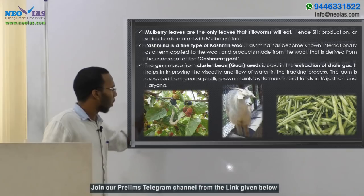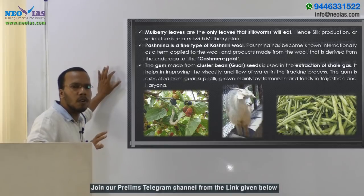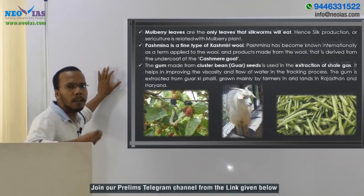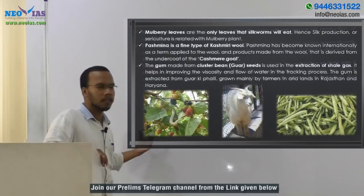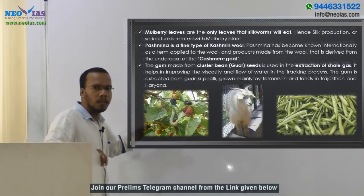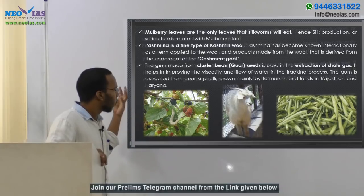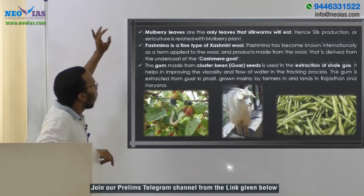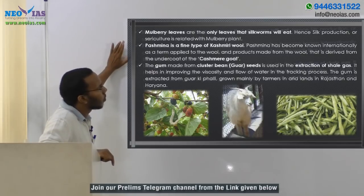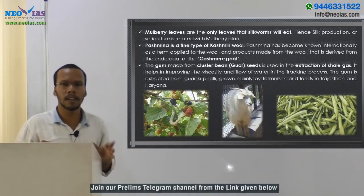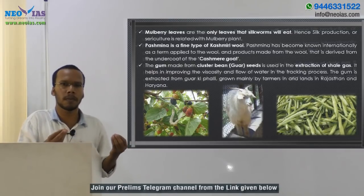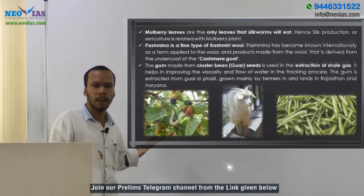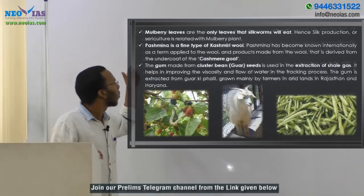You can see this is the mulberry plant. From primary level onwards we have been studying that silk is made from the silkworm's cocoon, and this silkworm grows only on mulberry plants. Mulberry leaves are the only leaves that silkworms will eat. Hence, silk production — or sericulture — is related to the mulberry plant.